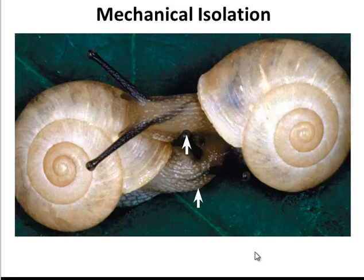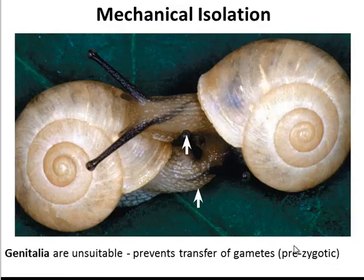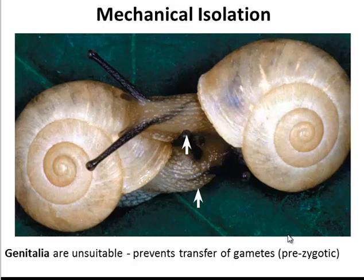Mechanical isolation is when the genitalia — the reproductive organs of two species — just aren't compatible with each other. In the case of these two snail species, because their spirals move in the opposite direction, their genital organs don't line up properly, and so the egg and the sperm cannot meet.